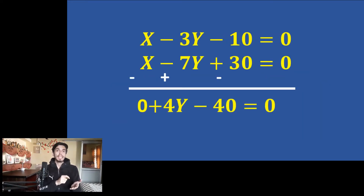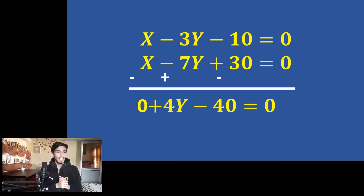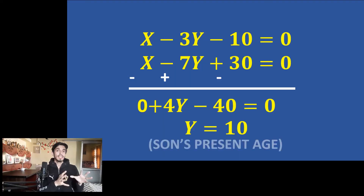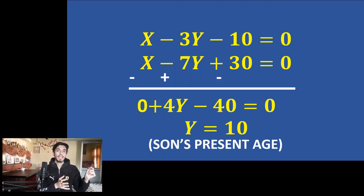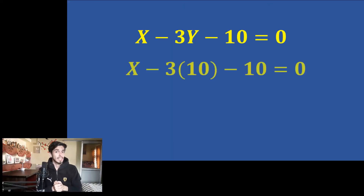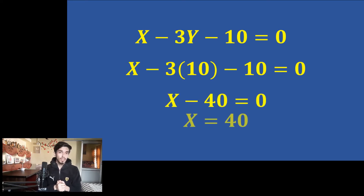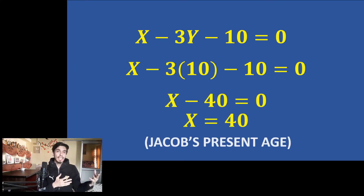Subtracting the two equations gives 4y - 40 = 0, so y = 10. His son's present age is 10 years. Substituting y = 10 back into one of the equations gives x - 30 - 10 = 0, which means x = 40.